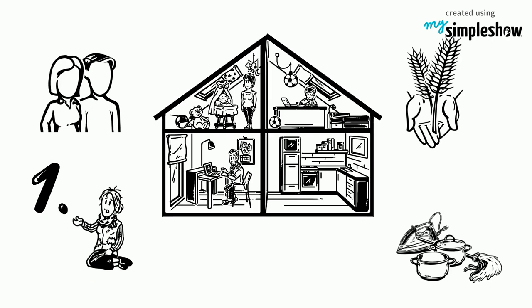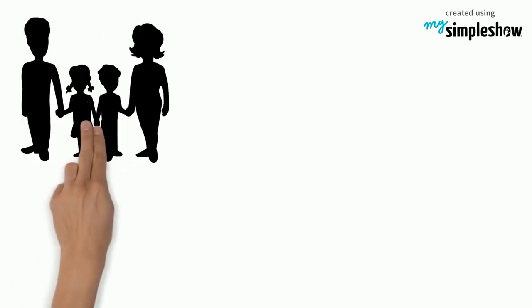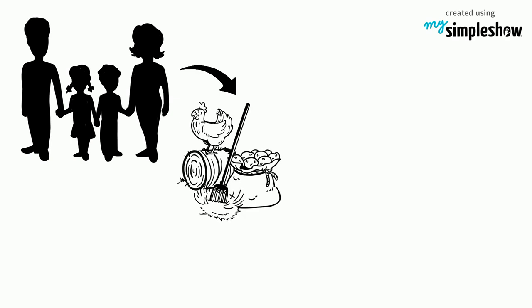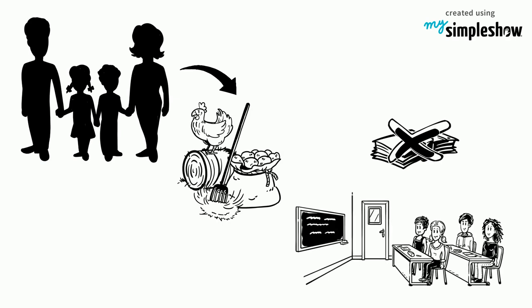High levels of poverty is the number one cause. Most families rely on basic farming to sustain their livelihoods, so they cannot afford to pay for their children's education, which is free only till primary level.